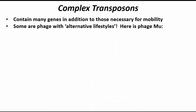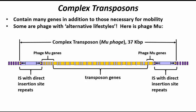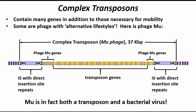So-called complex transposons look a bit like a TN element, but usually contain many genes in addition to those necessary for mobility — those are the yellow boxes in this illustration. Some complex transposons resemble a bacteriophage, and mu is in fact a bacterial virus which can function either as a transposon, moving within the bacterial genome, or as a phage, able to lyse the cell and infect new cells.